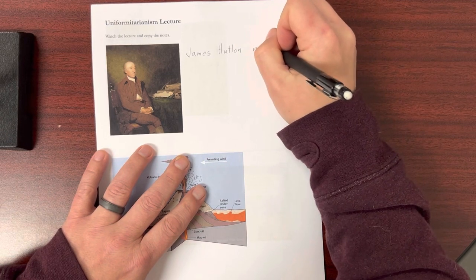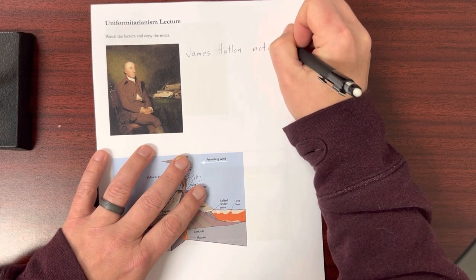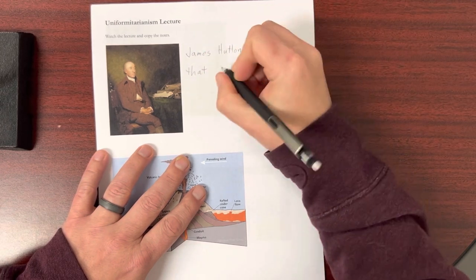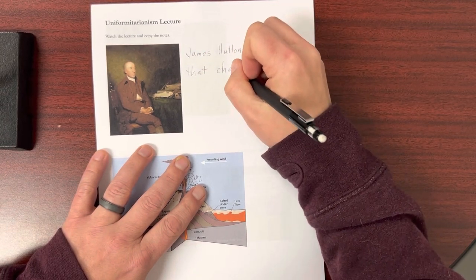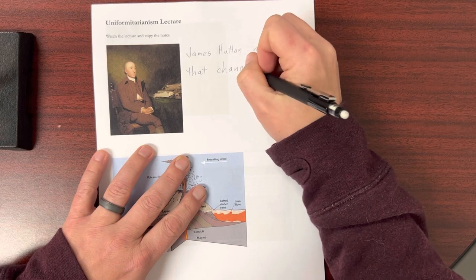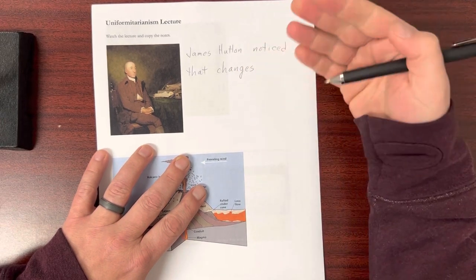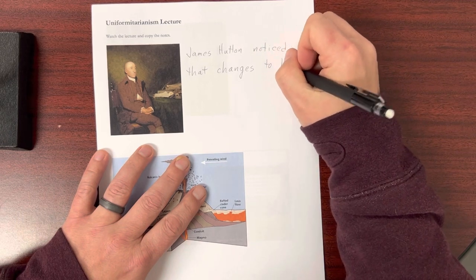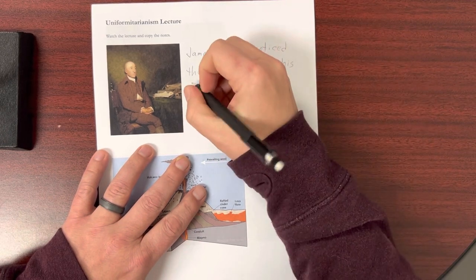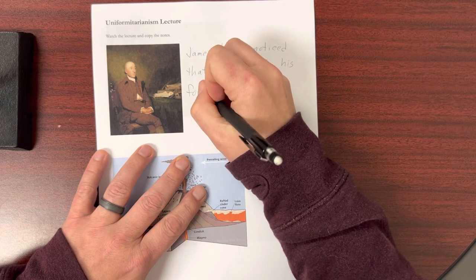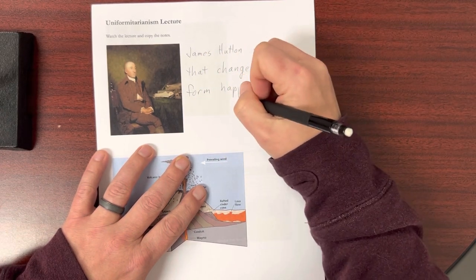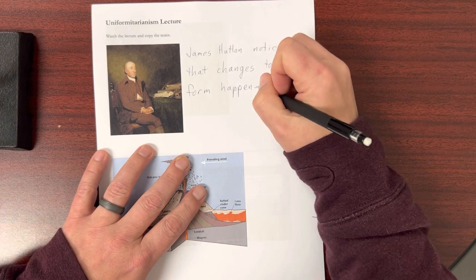But with his farm, one of the things that he noticed was that changes would happen slowly from season to season. Things like soil would gradually build up in certain places, but that would take years, or soil would erode from certain areas. This took a long time to happen. This wasn't a day-to-day thing that you could see.